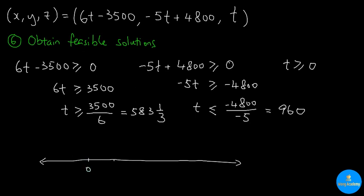It will help us visualize the answers if we try to plot the results on a real line. Zero goes here, 583 and 1 third goes here, 960 goes here. The first inequality tells us that we have to include 583 and 1 third and then go to the right. The second inequality says we have to include 960 and then go to the left. This inequality tells us to include 0 and then go to the right. The only overlapping region of all three inequalities is this particular interval. In other words, if we try to pick t to be any integer between 583 and 1 third and 960, then we will be fine.